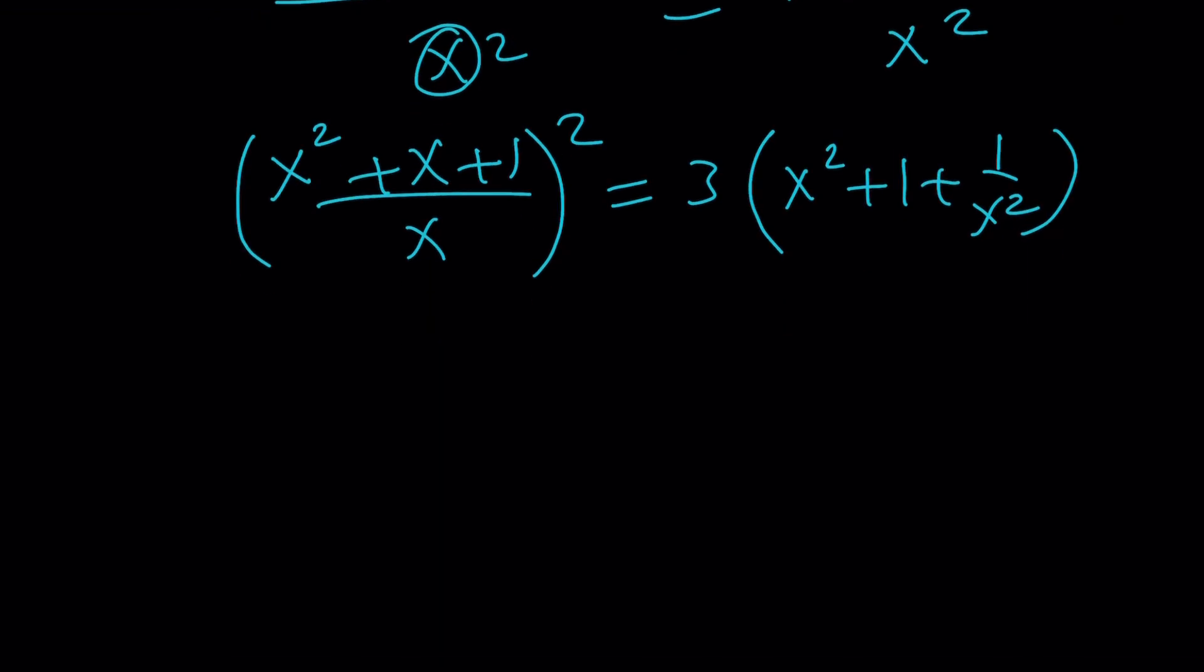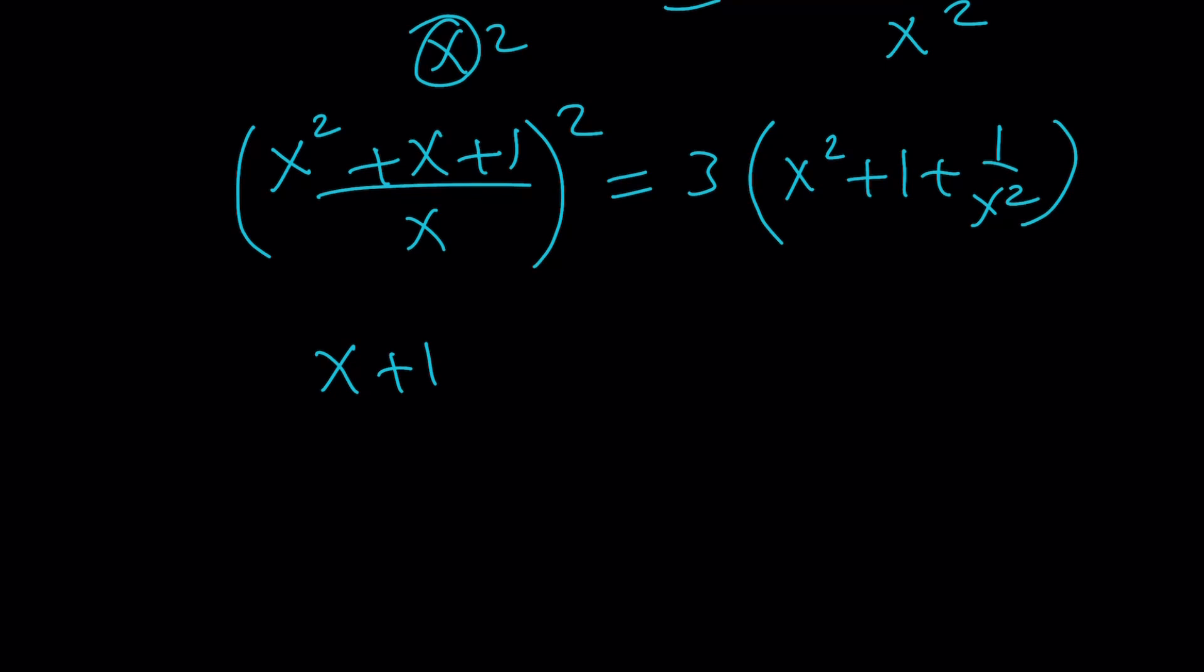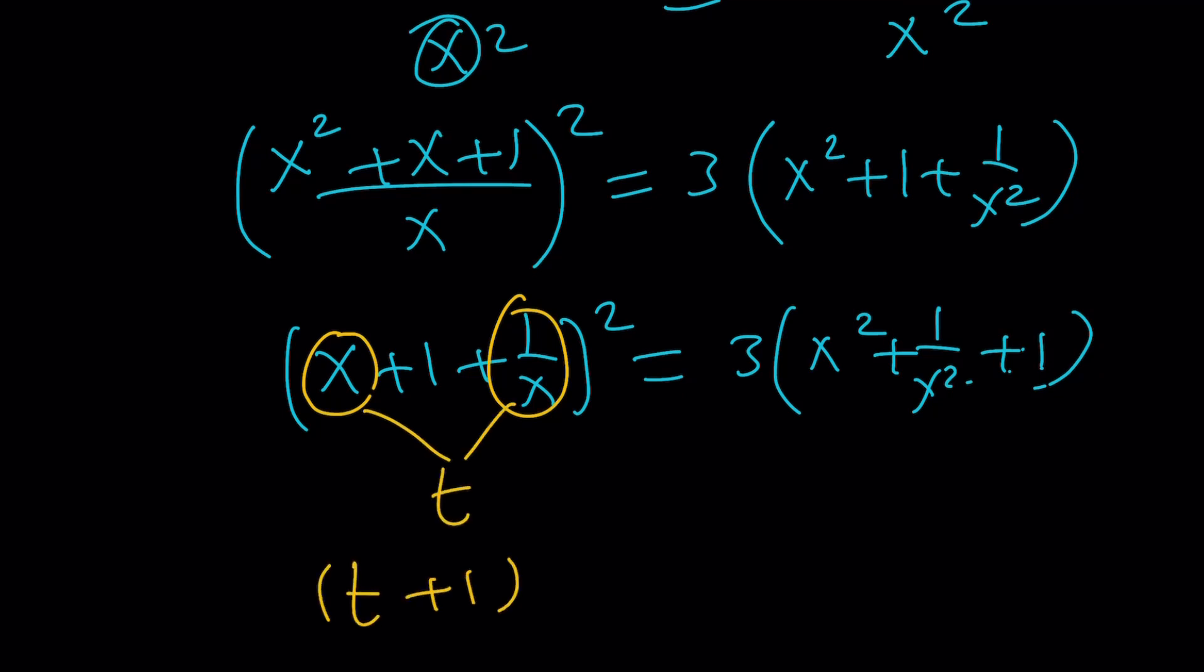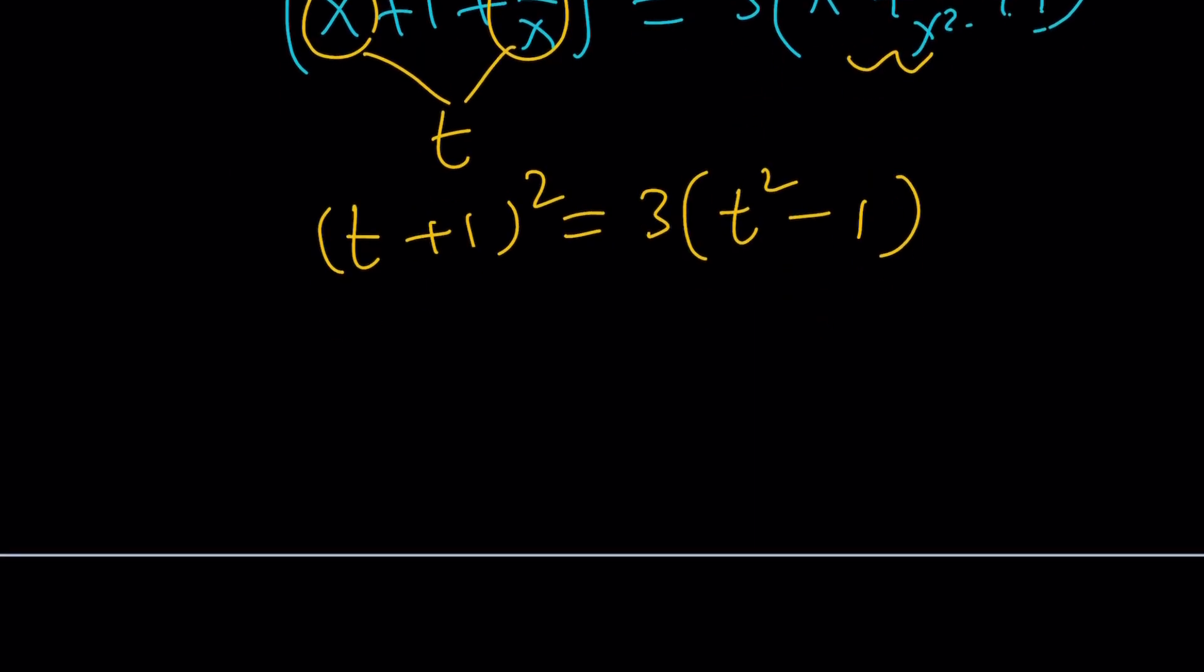So that's going to give me x squared plus 1 plus 1 over x squared. And then this can also be divided inside: x plus 1 plus 1 over x squared. And guess what? We're going to use substitution. And yes, we're going to call this something. Like, let's call this plus this t. We get t plus 1 squared equals 3 times—by the way, if t is equal to x plus 1 over x, this is going to be t squared minus 2 plus 1. That's the same thing as t squared minus 1. And from here we're going to get pretty much the same solutions.